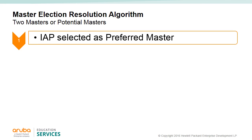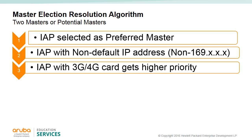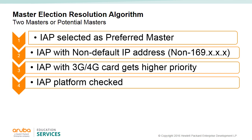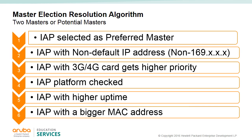If an IAP was configured as preferred master, then that IAP will boot up as the VC. The election process starts with any IAP that has an IP address and not the 169 address. If an IAP has a 3G or 4G backup link, then it is given more priority. The IAP with a higher platform is given priority. When all platforms are the same, the next parameter is the IAP with the highest uptime. If all IAPs were booted at the same time, then the IAP with the bigger MAC address is given priority. If two configured IAPs are set to be the preferred master, they will cause two IAPs to run as VCs and will split the network — this is not recommended.